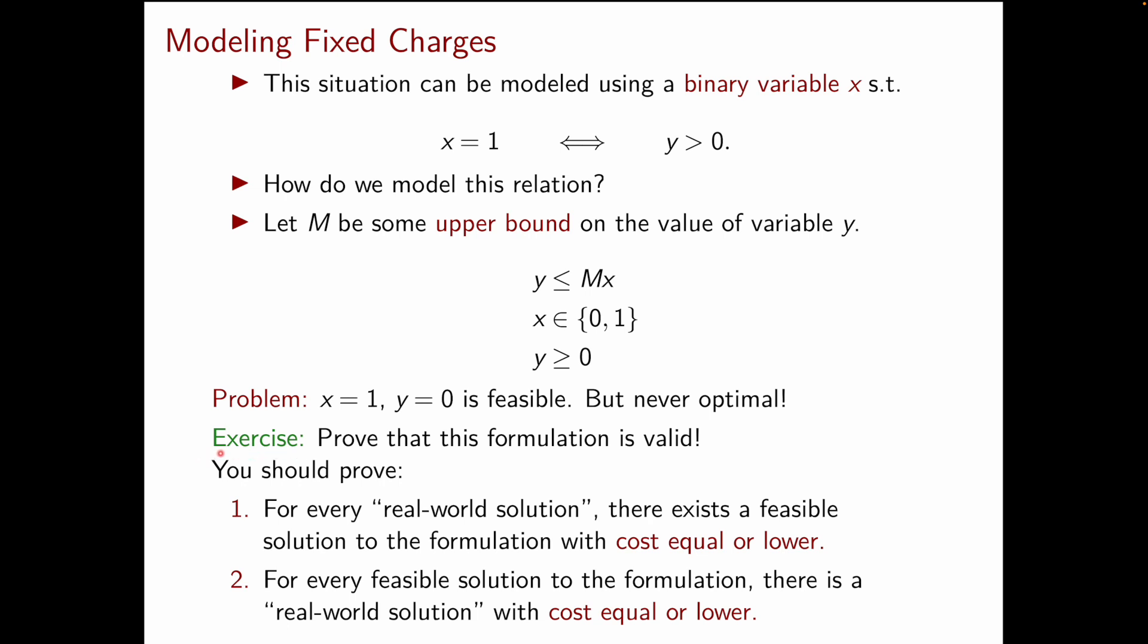At this point I leave as an exercise to you to prove that the formulation that you obtain with the addition of these constraints is indeed valid. To do so you should prove the following two directions. First, for every real world solution there exists a feasible solution to the formulation with cost equal or lower. And secondly, for every feasible solution to the formulation there is a real world solution with cost equal or lower.